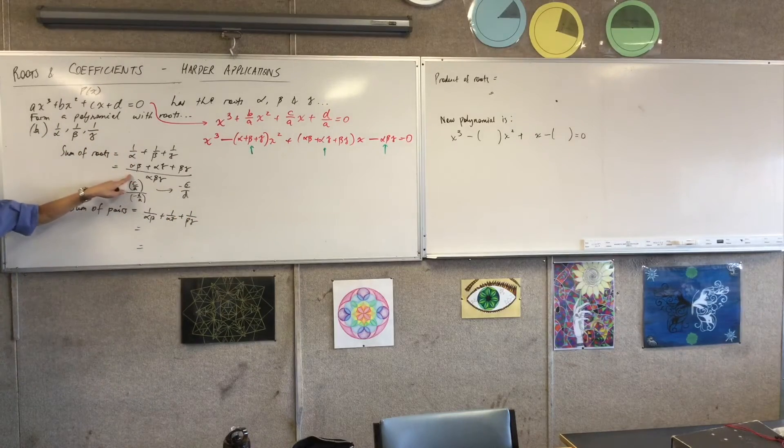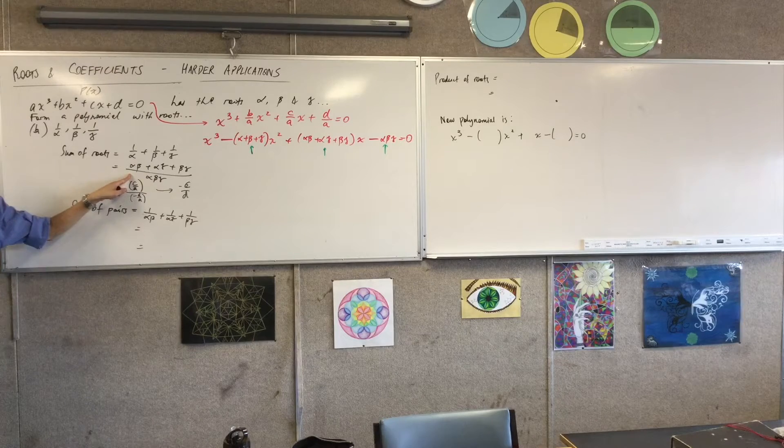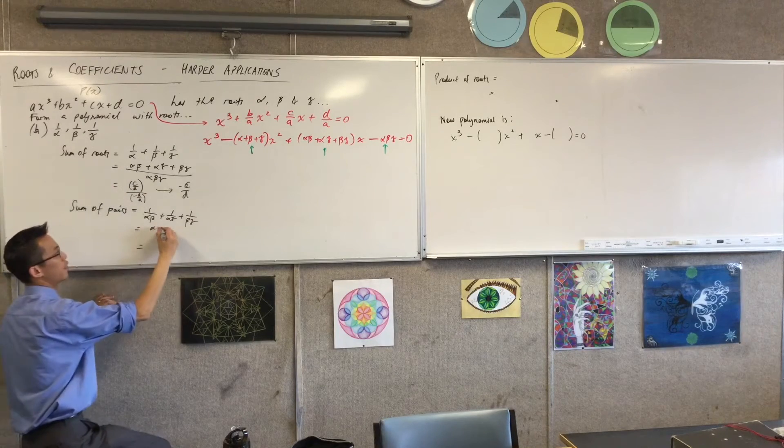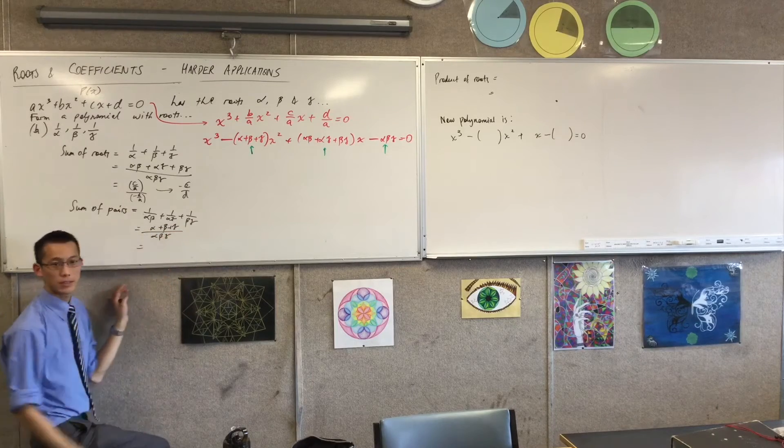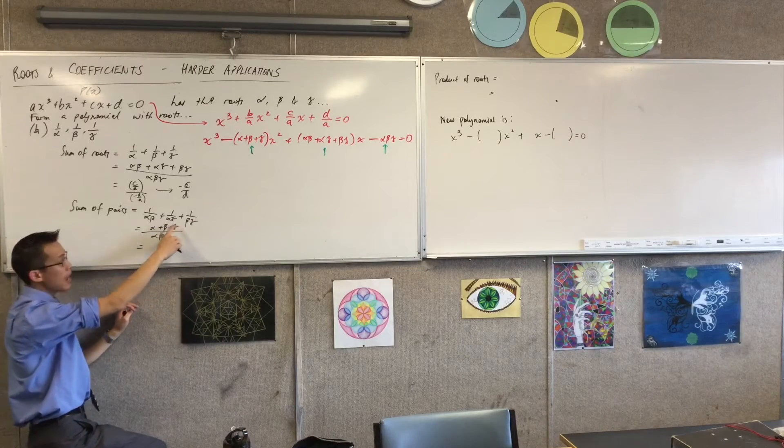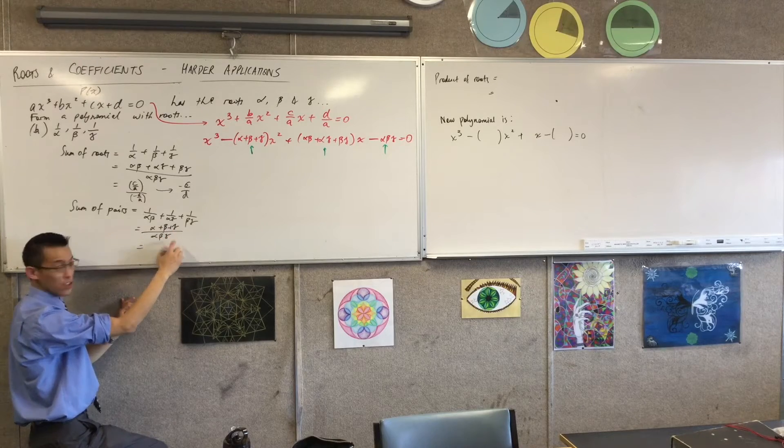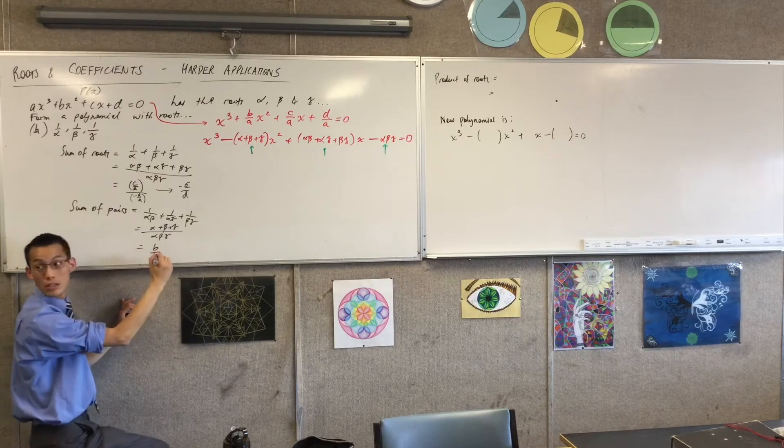Except on the numerator, you're going to get them one at a time. Alpha plus beta plus gamma all on the product. Because this is minus B on A, and that's minus D on A, you're just getting B on D, aren't you?